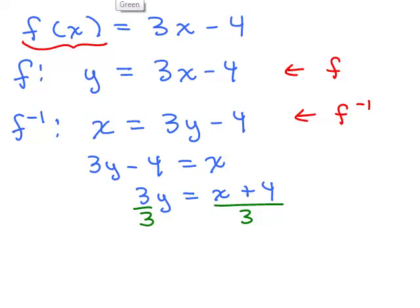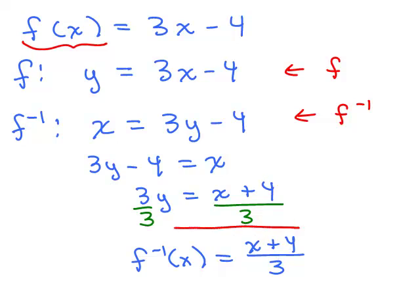On the last step, we replace y with f inverse of x. So we write f⁻¹(x) = (x + 4)/3. Note there's more than one way to write this — you could write it as x/3 + 4/3, since it's really a line. But leaving it as (x + 4)/3 is fine. This is our inverse function f inverse of x.